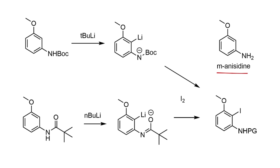Meta-anisidine was used as the starting material, and a directed ortholithiation approach was used to install the iodine. The Boc-protected aniline was deprotonated with tert-butyllithium, affording an aryllithium intermediate that was reacted with molecular iodine to afford the iodinated product.